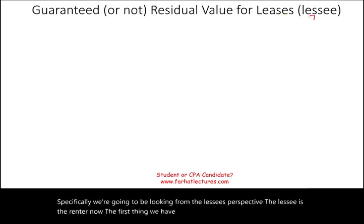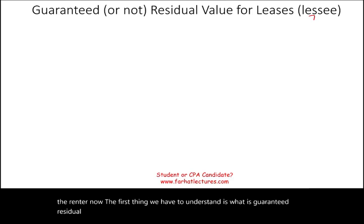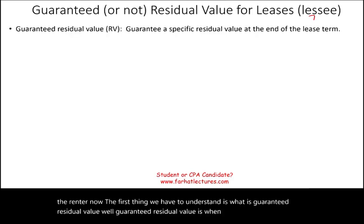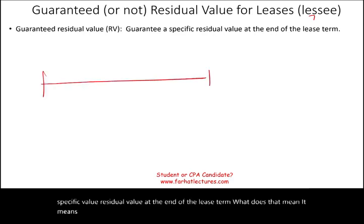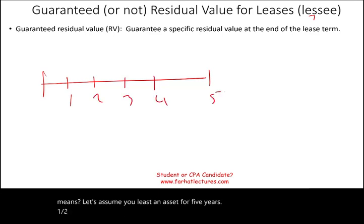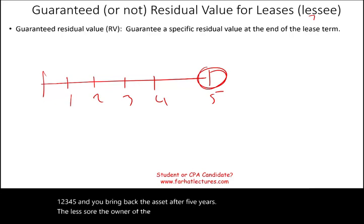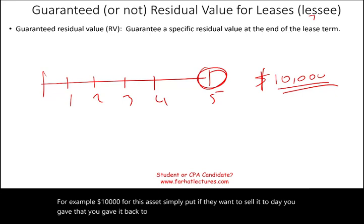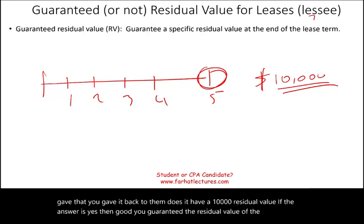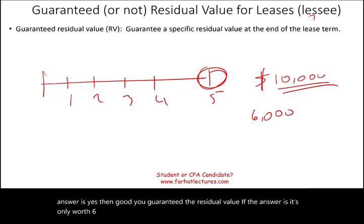The first thing we have to understand is what is guaranteed residual value. Guaranteed residual value is when the lessee guarantees a specific residual value at the end of the lease term. For example, assume you leased an asset for five years. When you bring it back, the lessor expects a residual value of ten thousand dollars. If it's worth ten thousand, you've guaranteed that value. If it's only worth six thousand and you guaranteed ten thousand, you have to come up with the difference.